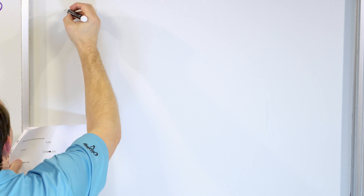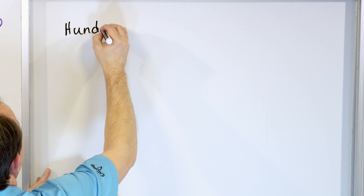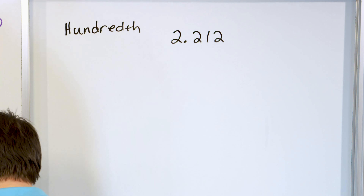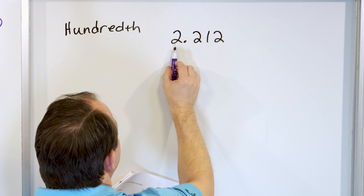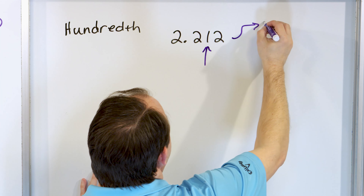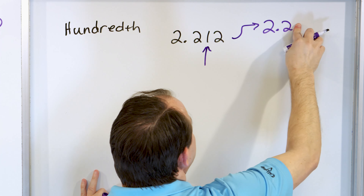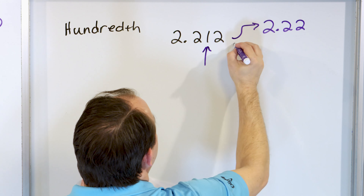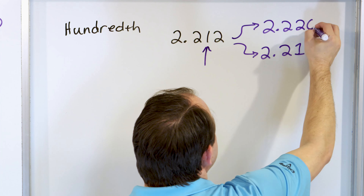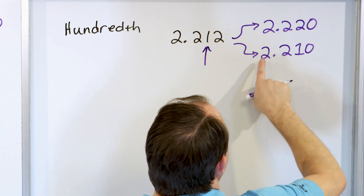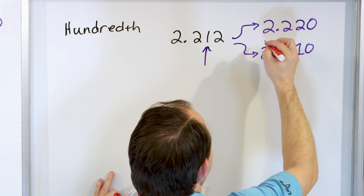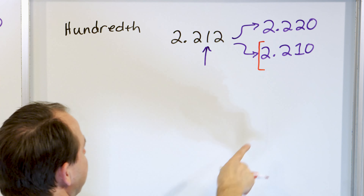Let's round two point two one two to the nearest hundredth. Here's the whole number, here's the tenths, here's the hundredths — put the arrow there. We're either rounding up to two point two two or staying down at two point two one. To decide, look next door — it's a two, which is way less than five, so we're rounding down to two point two one.